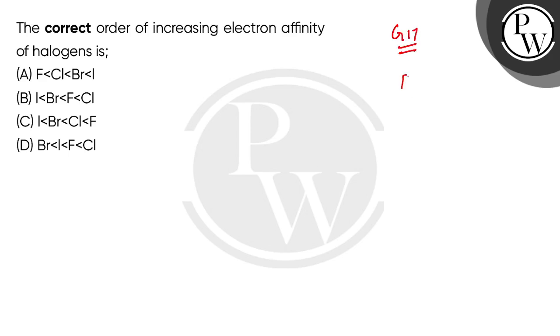These are fluorine, chlorine, bromine, iodine, and below these are also radioactive so we don't talk about that. So you have to arrange halogens in increasing electron affinity. Electron affinity is the amount of energy that is released generally.